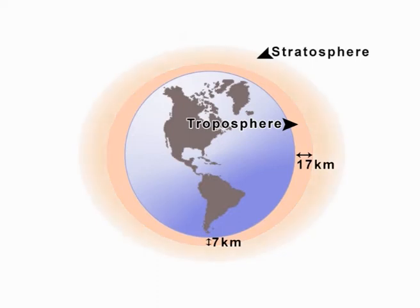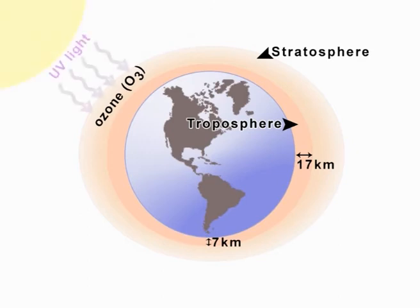Above it is the stratosphere, where the air gets increasingly thin. However, the stratosphere does contain a form of oxygen, called ozone, which prevents a lot of harmful ultraviolet radiation from reaching the surface of the Earth.